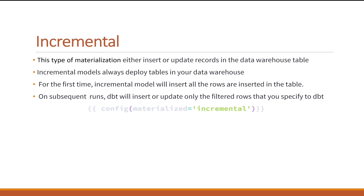Incremental materialization either inserts or updates records in the data warehouse, and always deploys tables. The first time you execute an incremental model, all rows will be inserted into the table. On subsequent runs, dbt will insert or update only the filtered rows that you specify — it will not insert all rows, only the specified rows will be inserted or updated. Going forward we'll have practical examples.